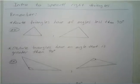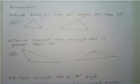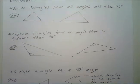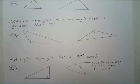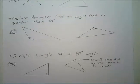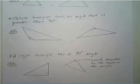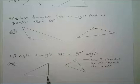And then you have what we're going to be spending all of our time on in this section: the right triangle, which has a 90 degree angle. You can usually tell the 90 degree angle — if they don't write 90 degrees, you'll see the little square in the corner. That's your 90 degree angle.